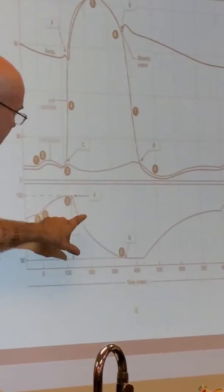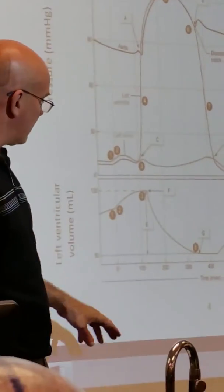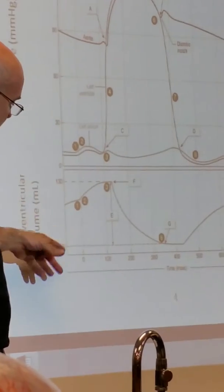This is your stroke volume right here—the amount of blood that you pump, which is your EDV minus your ESV. Then you can take your stroke volume divided by the total amount of blood in your heart.